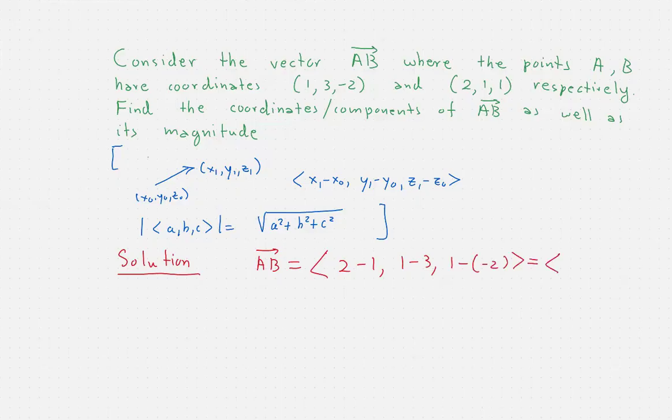And now the magnitude of this vector will be the square root of one square plus negative two square plus three square. So that's square root of one plus four plus nine, which is square root of 14. And that's all. Thanks for watching.